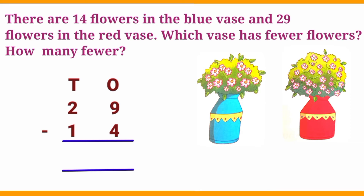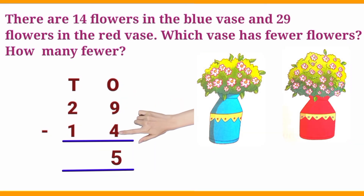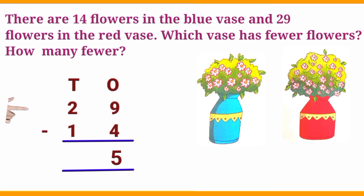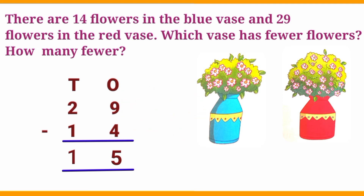First, subtract the ones column: 9 minus 4 is equal to 5. Second, subtract the tens place: 2 minus 1 is equal to 1. So we get the answer: 29 minus 14 is equal to 15.